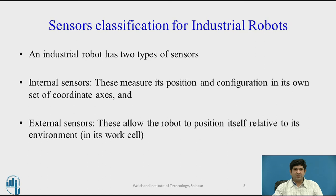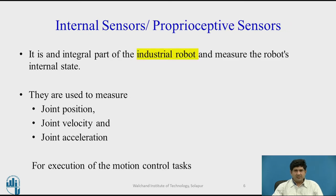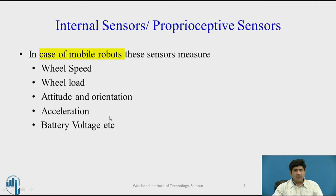Internal sensors are also sometimes called proprioceptive sensors. These are an integral part of the robot and they measure the robot's internal state — typically joint position, joint velocity, and joint acceleration in the case of industrial robots. These are absolutely essential for the execution of all motion control tasks. All control algorithms — joint position servos, velocity servos, and acceleration control systems — depend upon the feedback given by these sensors in order to execute the control task.